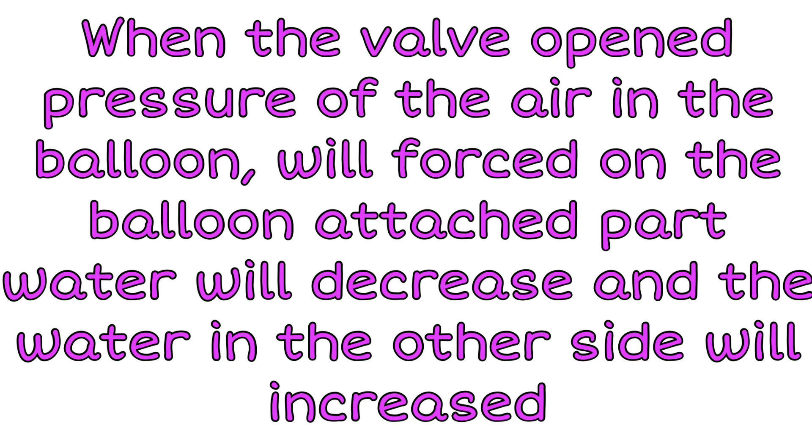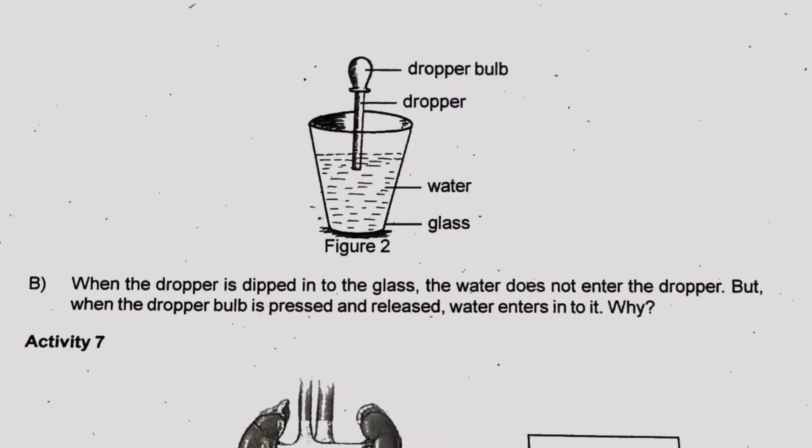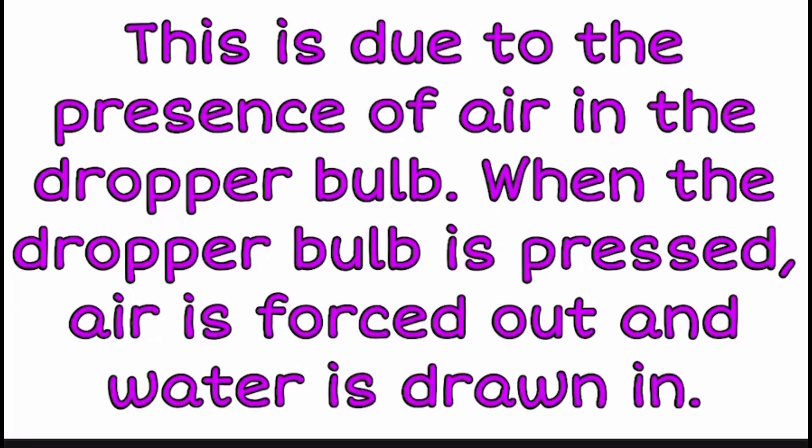The next activity involves a dropper bulb with water and a glass. When the dropper is dipped into the glass, water does not enter the dropper. This is due to the presence of air in the dropper bulb.